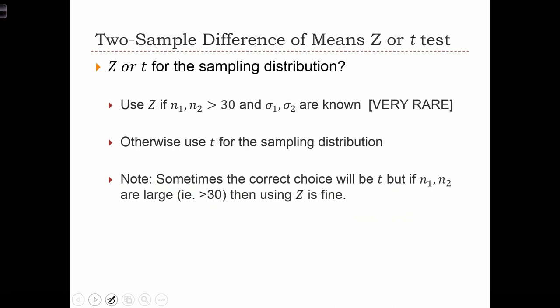First of all, should we use z or t for the sampling distribution? The general rule of thumb is to use z if both n1 and n2, the two sample sizes, are both greater than 30, and sigma1 and sigma2 are known.